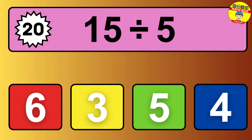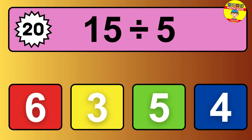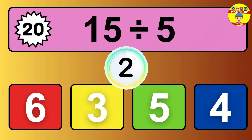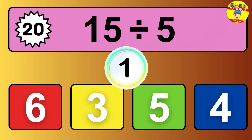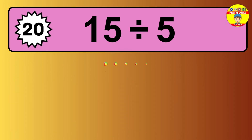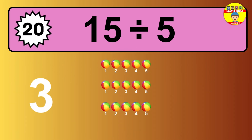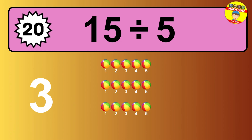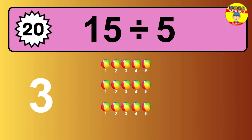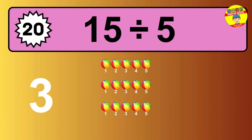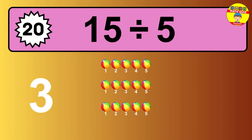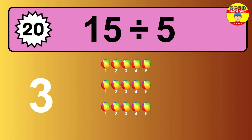15 divided by 5 — time to think. Let's go to the solution. Divide the number 15 by 5. Each group contains 5 units, so dividing 15 by 5 results in 3 equal groups. Thus, the result is 15 divided by 5 equals 3.